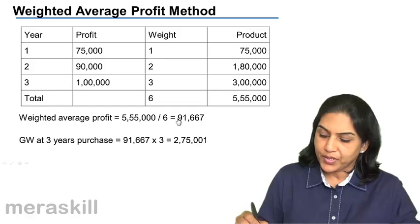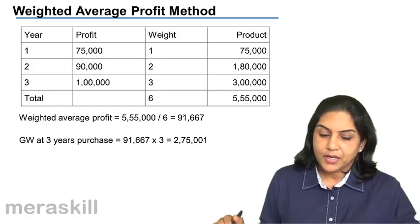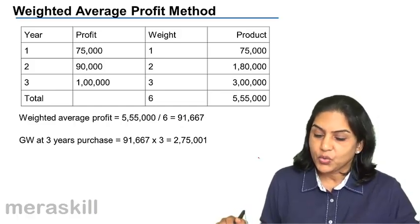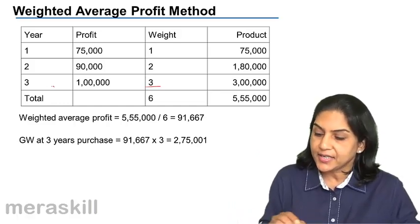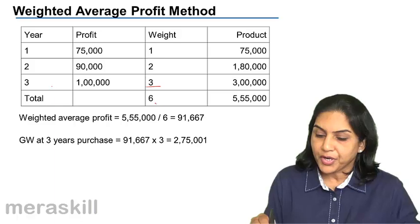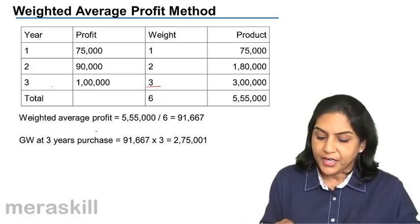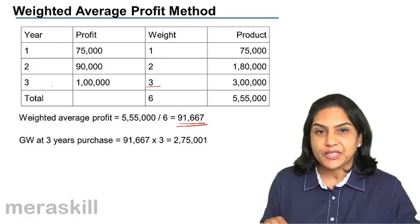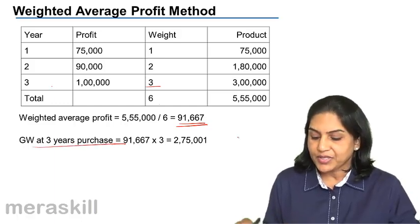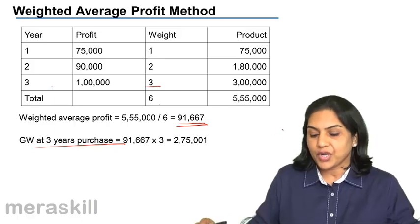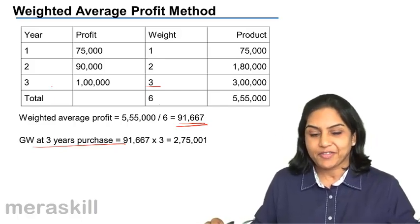The same thing has been worked out here. Year 1, year 2, year 3. The weights have been given as 1, 2, 3. Highest weight to the latest year. Product we get, total of product, total of weights. Divide to find out the weighted average profit: 91,667. Goodwill at 3 years purchase is 91,667 into 3, which equals 2,75,000.